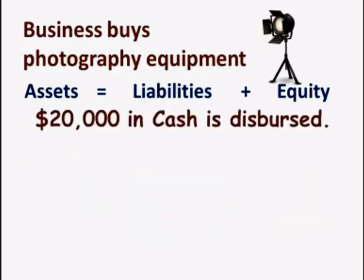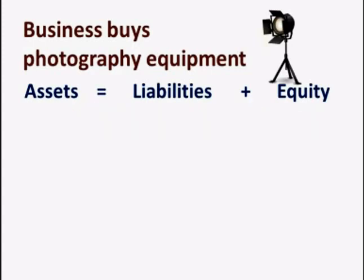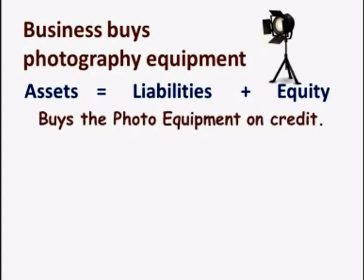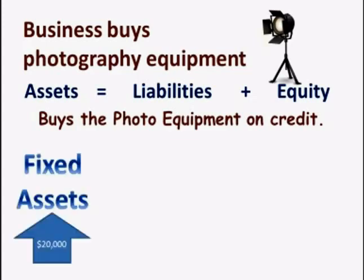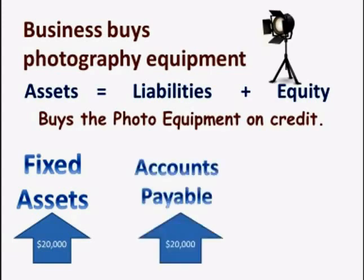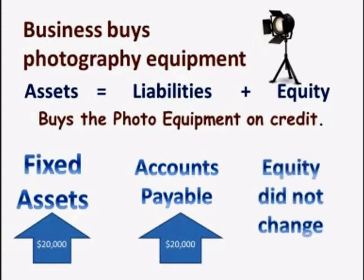Now, we could have said instead of spending cash, our photographer purchased the equipment on credit. In that case, fixed assets go up because the photo equipment is now owned by the business. Accounts payable goes up because the photographer will pay the vendor on a future date. Equity was not affected in this transaction, and the accounting equation balances once again.